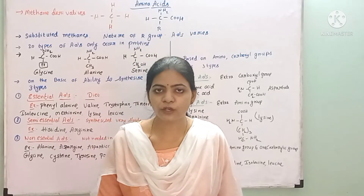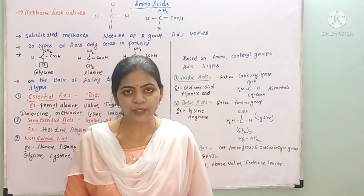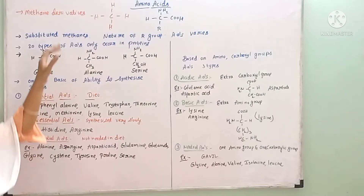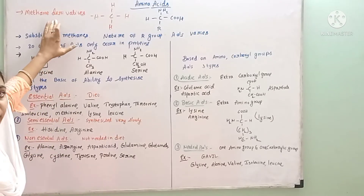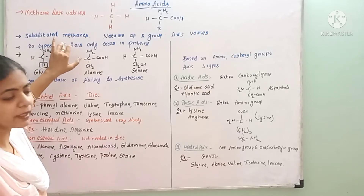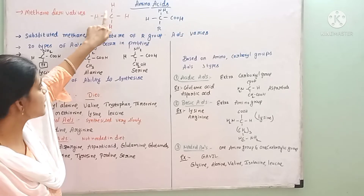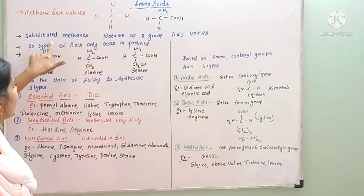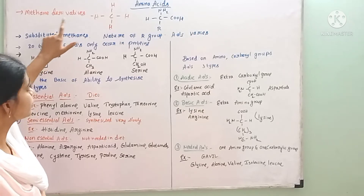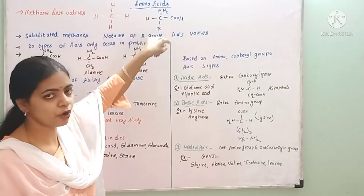Amino acids are bio-micro-molecules. Another name for amino acids is methane derivatives or substituted methane. The formula of methane is CH4, with one carbon and four hydrogen atoms. Amino acids were called substituted methanes because the four valency positions were replaced by four compounds.